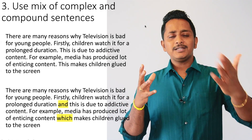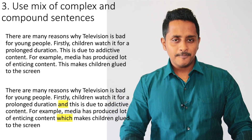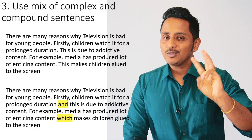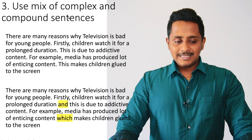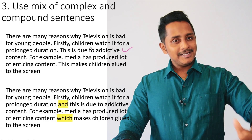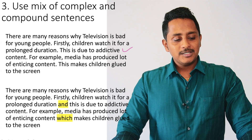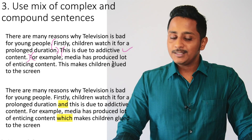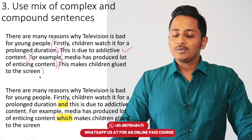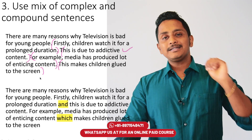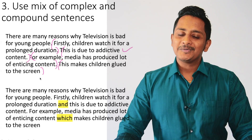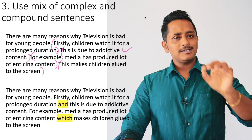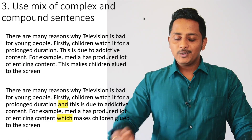Shortcut number three: use a mix of complex and compound sentences. In grammar, sentence formation is a big area. Always try to use three types: simple sentences, compound sentences, and complex sentences. For example, a paragraph with four consecutive simple sentences — 'There are many reasons... Firstly children watch it... This is due to addictive content... Media has produced enticing content' — will not score well.